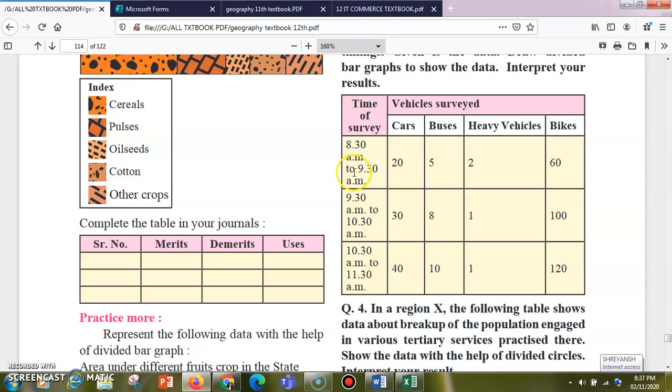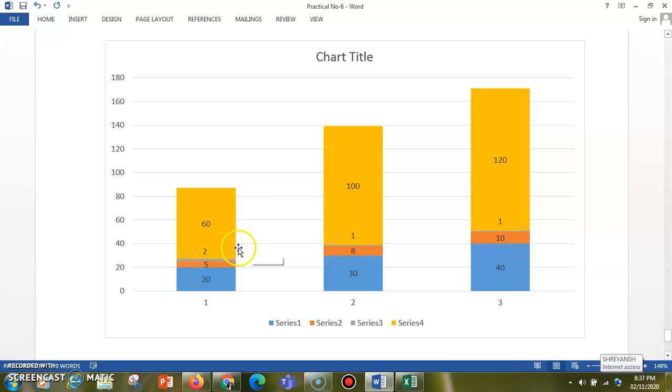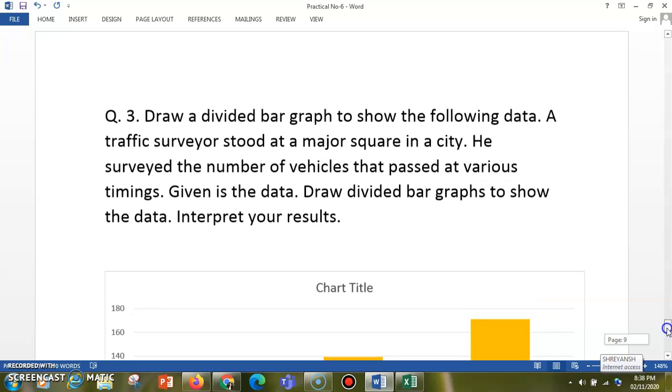Then you have to plot according to the data, according to the percentage of data which has been allotted to you. This is how you draw a divided bar graph or divided bar graph.